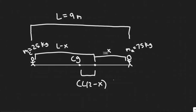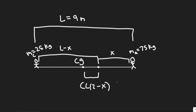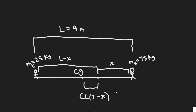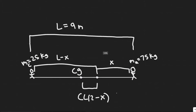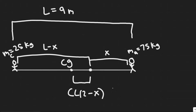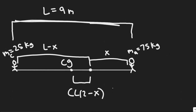The hardest part about this problem is drawing what's going on and labeling different distances. We have the adult on one side with a mass of 75 kilograms, and the child on the other side with 25 kilograms. The total length of the board is 9 meters, labeled as L. The pivot point is where the board will rotate, and we denote the distance from the adult to the pivot as X. The distance from the child to the pivot is then L minus X.